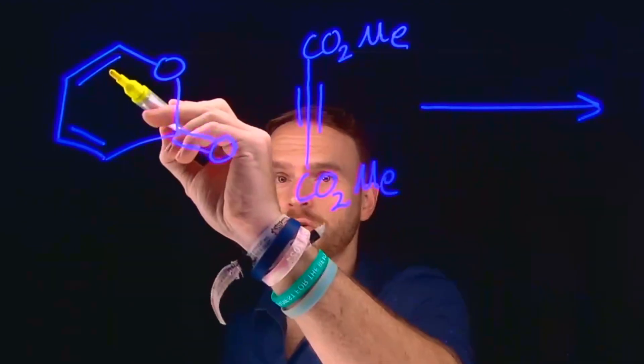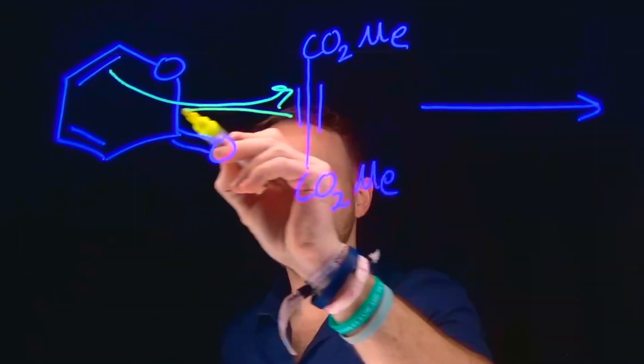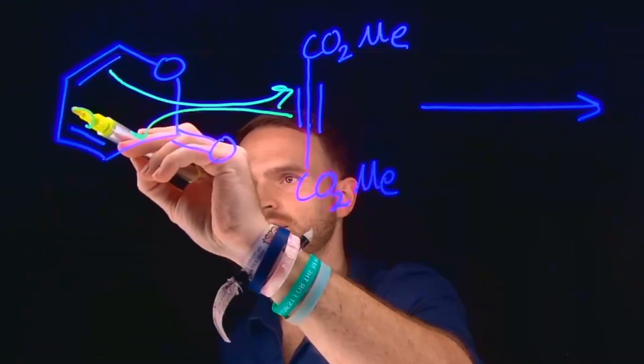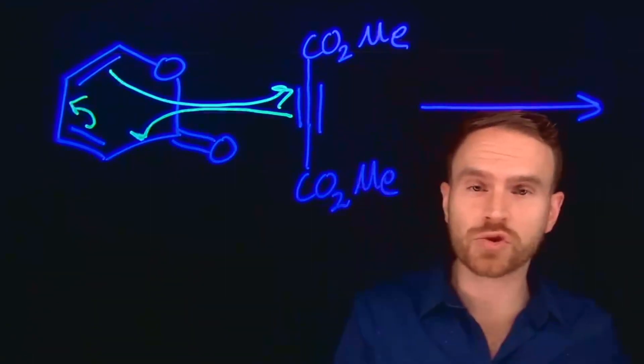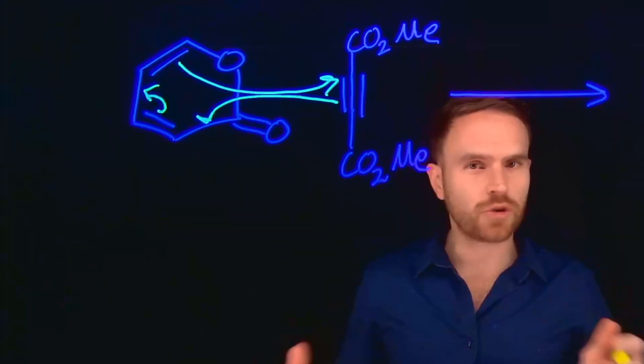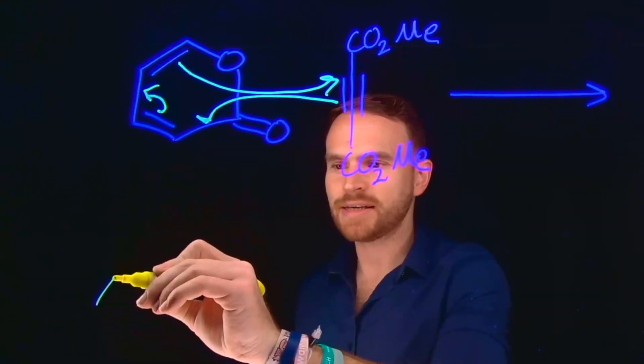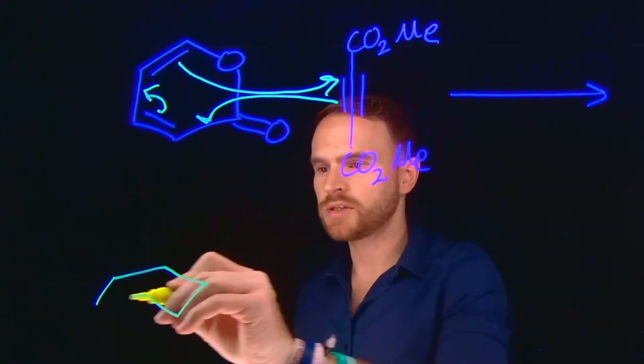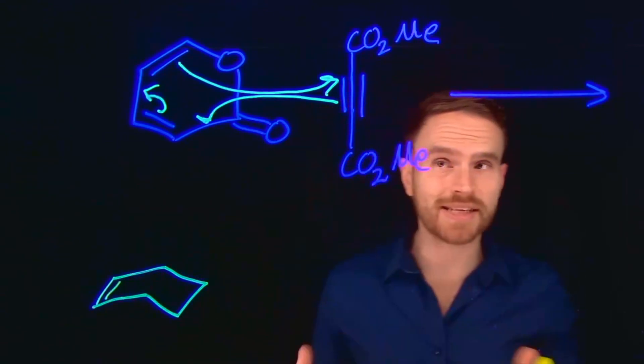In this cycloaddition reaction, the electrons participate in this electrocyclic system to make a fused ring bicyclic system. So the classic product of any Diels-Alder reaction is going to be this cyclohexane. But in this case, since we had a triple bond here...